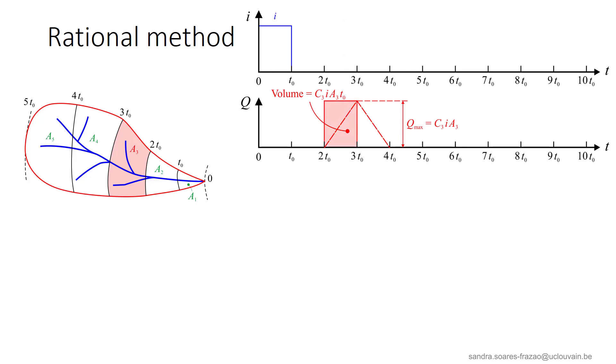In practice, for simplicity, the triangular hydrograph will be represented as a rectangle, with the same area. The volume of water and the maximum discharge are the same as for the triangle. Only the internal time of concentration of A3 is neglected. So, applying the same principle for the other subcatchments, we can construct the resulting schematic hydrograph.